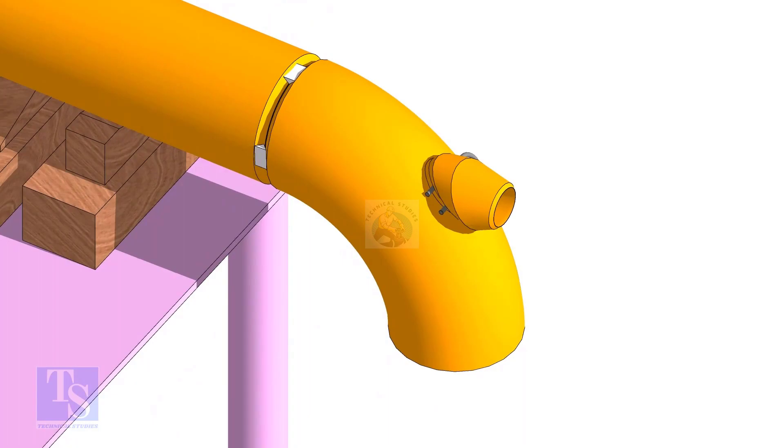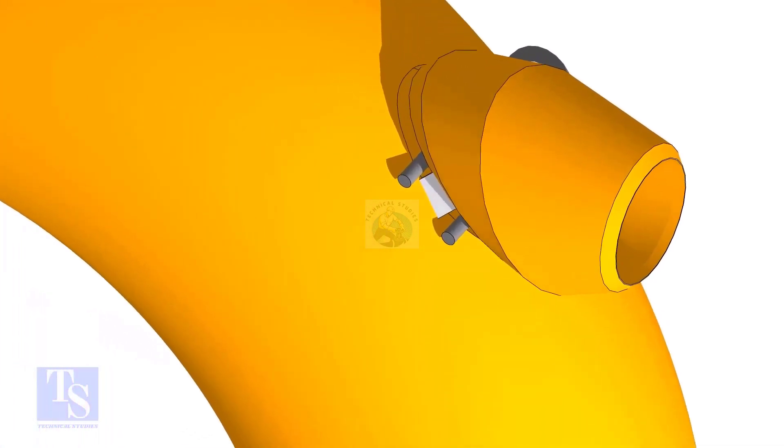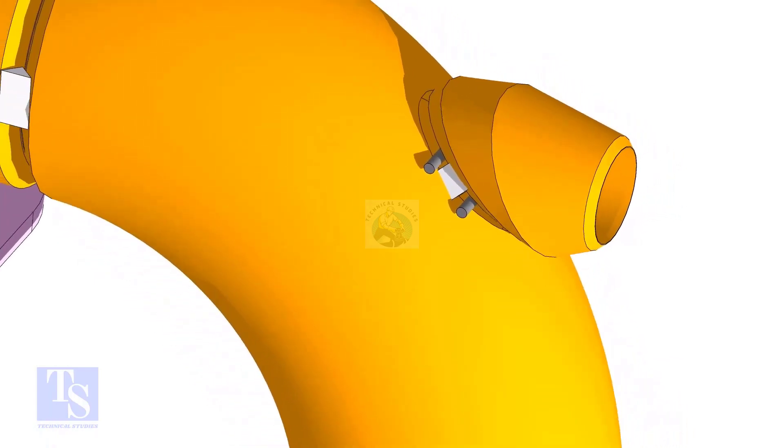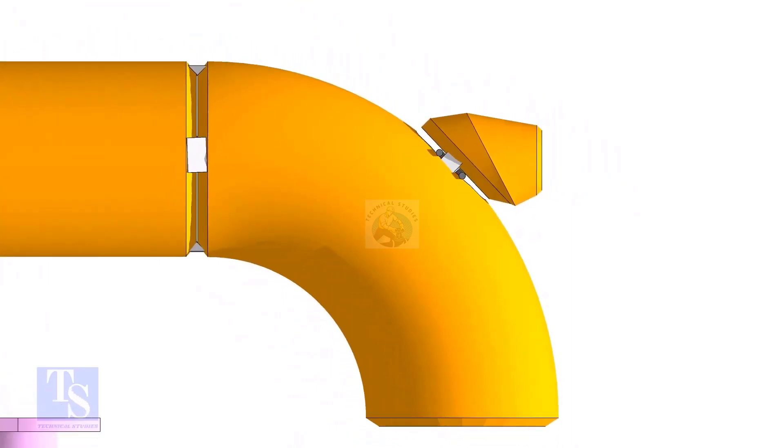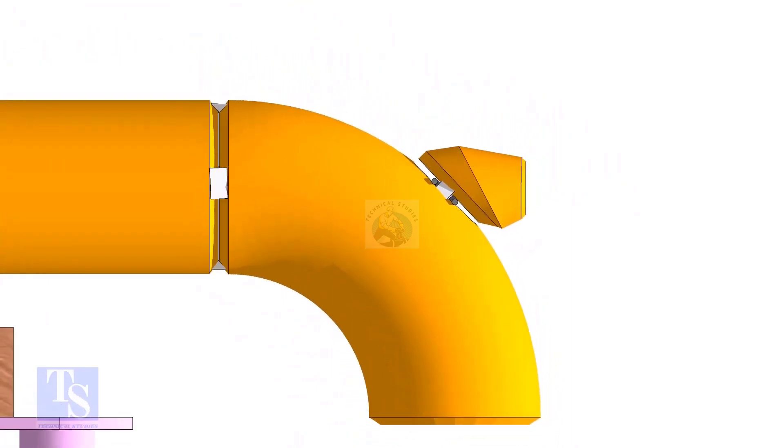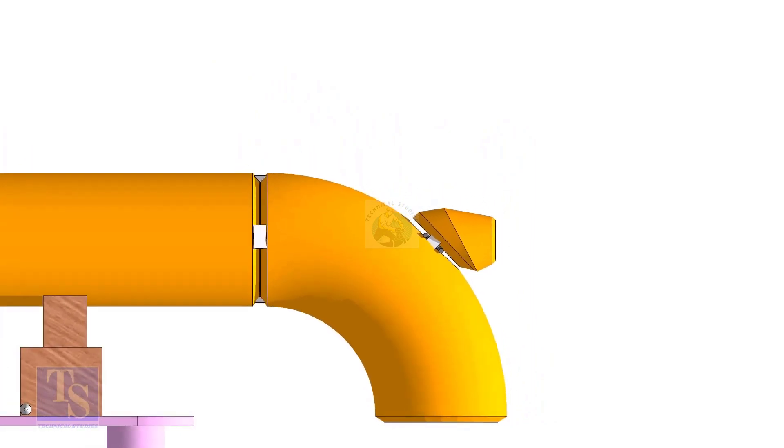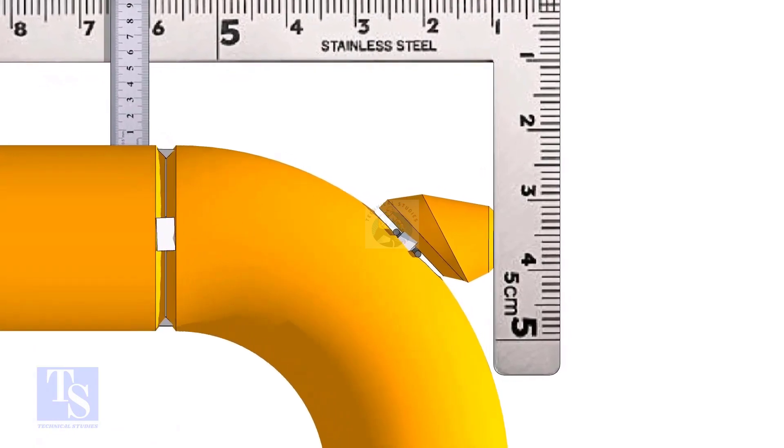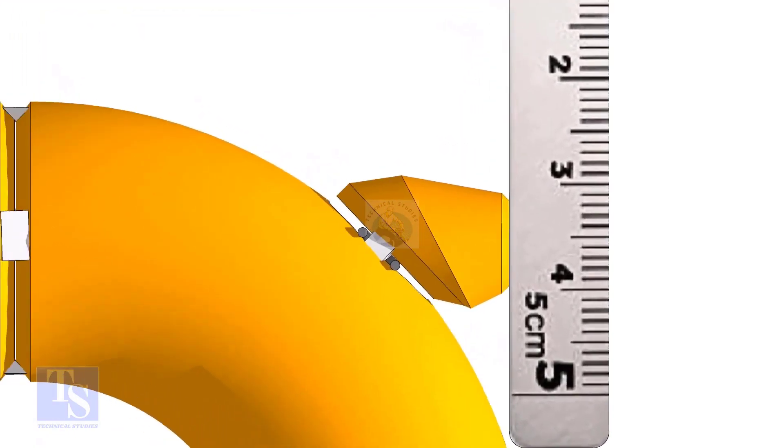Tack weld on the opposite side. Maintain the vertical squareness and tack weld on the top and bottom side of the elbowlet.